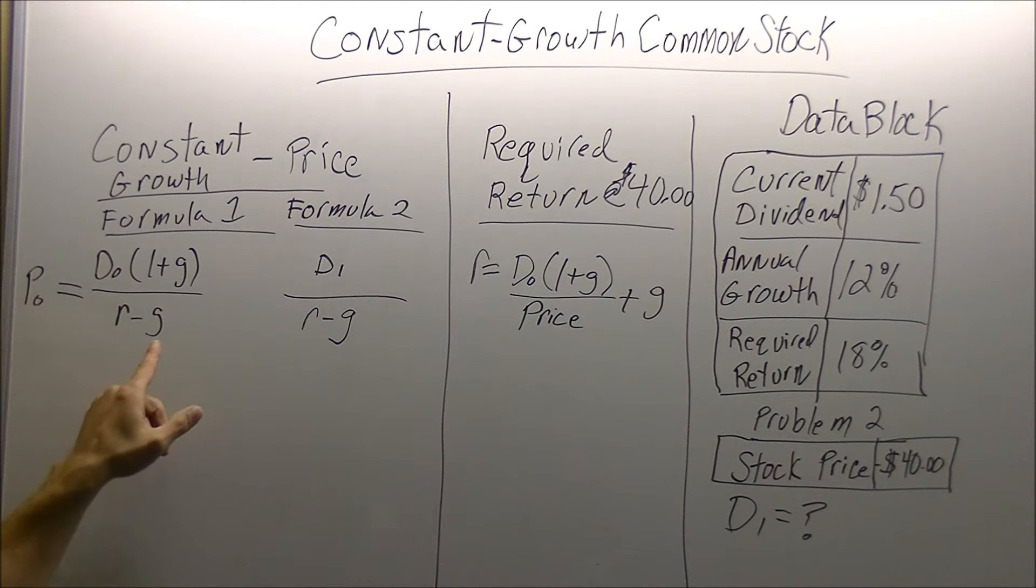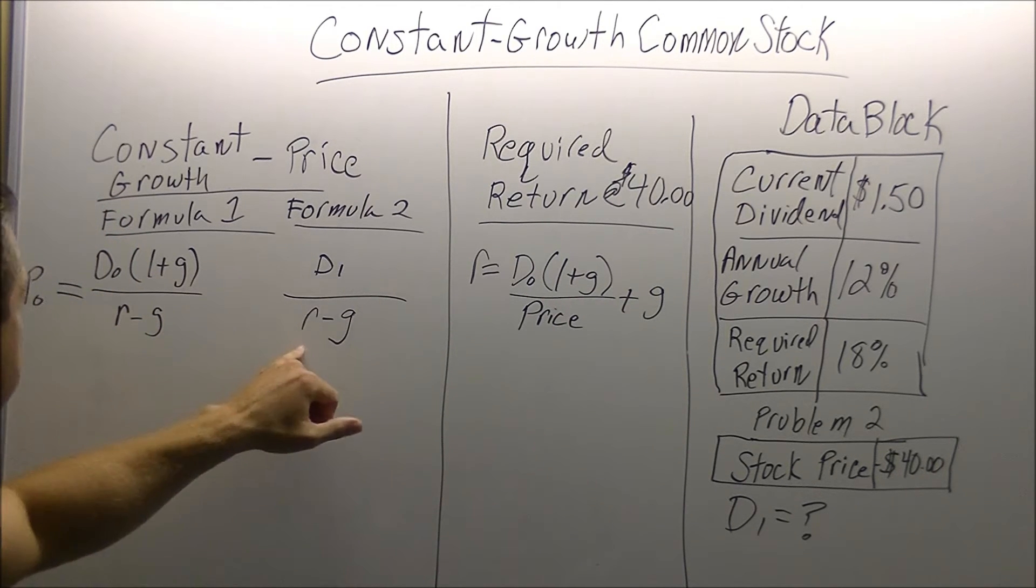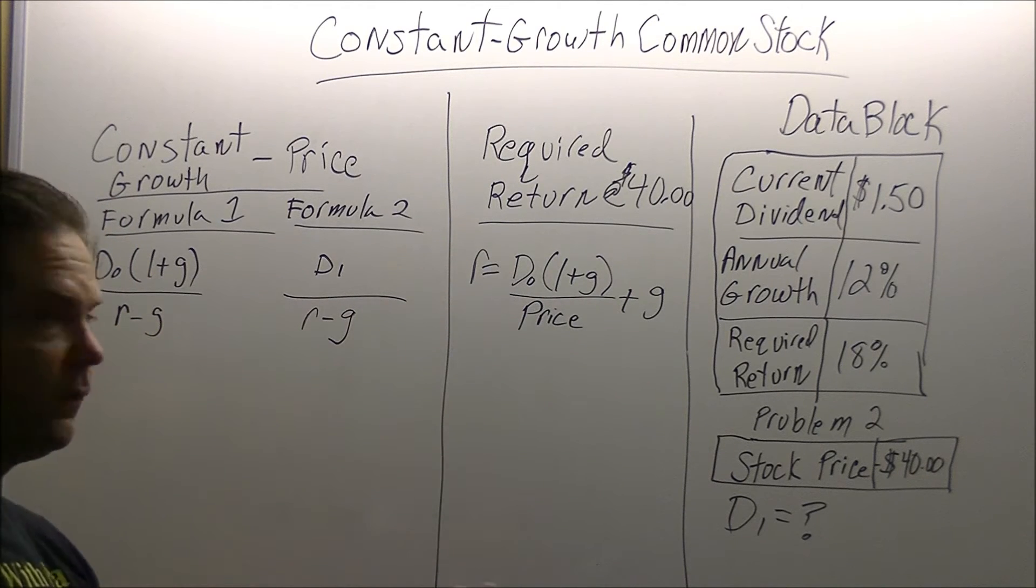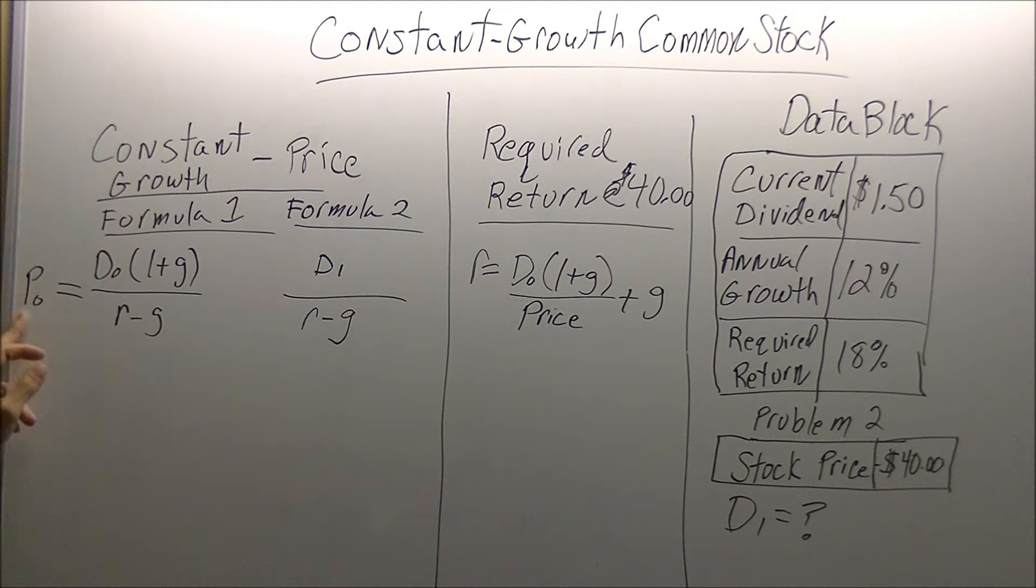Annual growth is going to be our G. And the last variable is investors required rate of return is 18% on the investment. Required return is going to be R. We have the four variables. For this formula, we are solving for price.